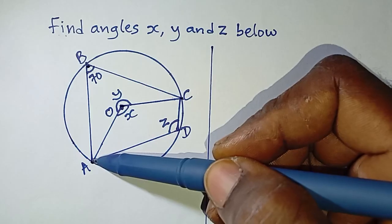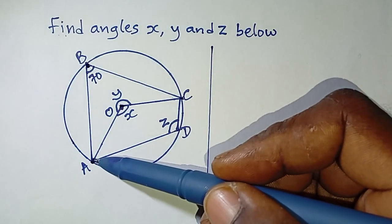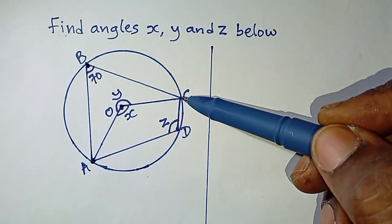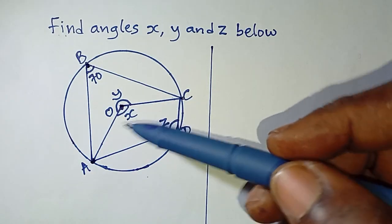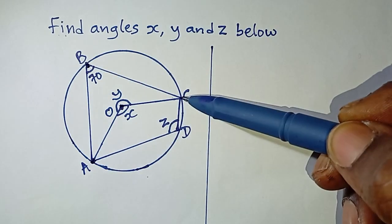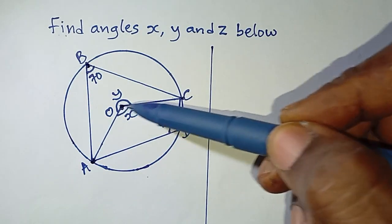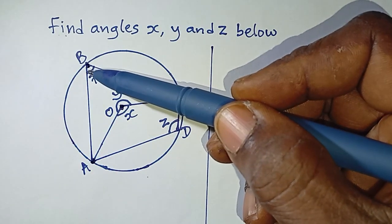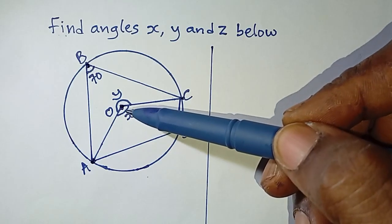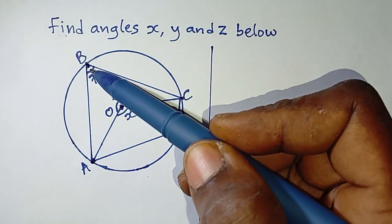One pair of lines moves from A to the circumference point B and from C to the circumference point B. The other pair moves from A to the center O and from C to the center O. When two lines go to the circumference to form an angle, and another two lines from the same points go to the center to form another angle, these angles are related. The theorem states that the angle at the center is twice that at the circumference.